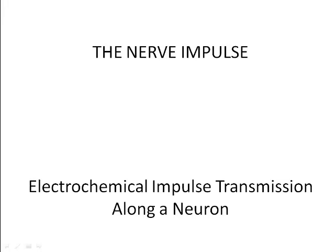The nerve impulse: electrochemical impulse transmission along a neuron. What exactly is the nature of the electrical impulses traveling along neurons? Is it like the electricity traveling through wires, where the energy is passed from electron to electron? Not at all, but it does create voltage across the membrane.